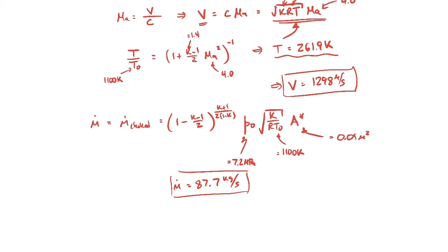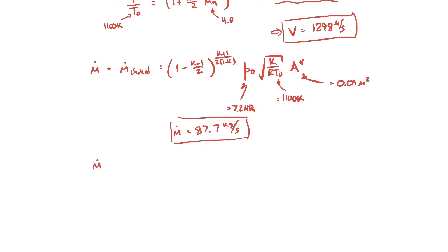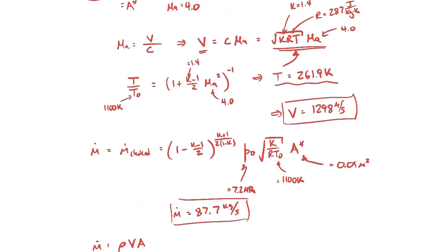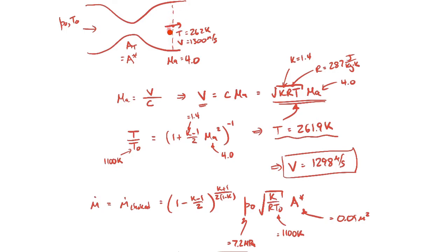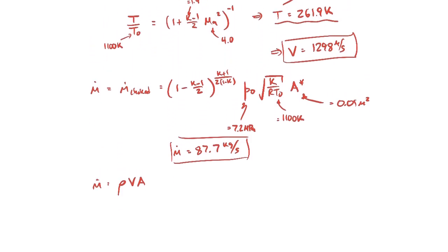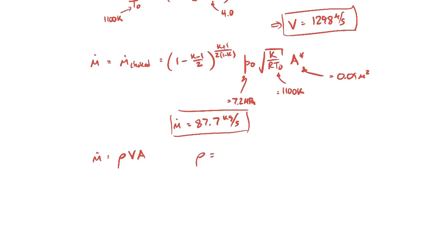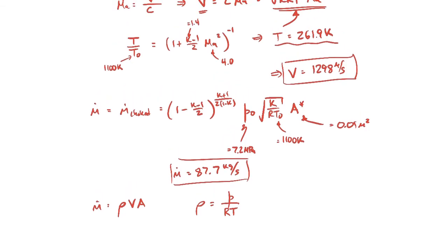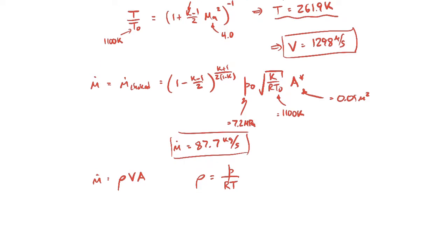There's another way to find the mass flow rate. Instead of the choked flow formula, we can use the direct formula: mass flow rate equals density times velocity times area. We calculate the density and area at the location where the Mach number is 4. Since we already know the temperature at that location, we can find the density using the ideal gas law, which relates density to pressure and temperature.